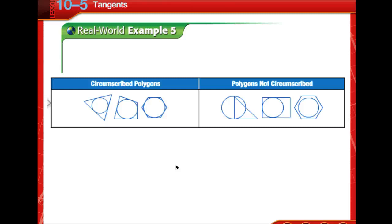Now just because the circle is tangent to one or more of the sides of a polygon does not mean that the polygon is circumscribed about the circle. As shown in this second set of figures, every side of the polygon must touch the circle, not just some of the sides. So these are circumscribed polygons and these are examples of polygons that are not circumscribed.